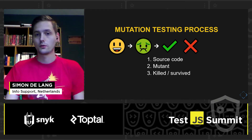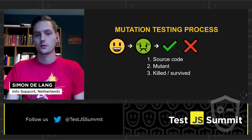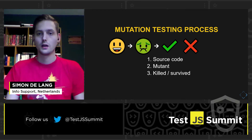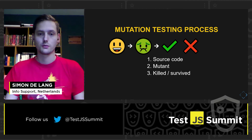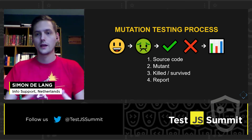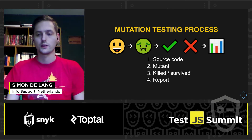So the mutation testing framework will run your tests and it can have either one of two outcomes. Either the mutant has been detected because of a failing test — in that case, the mutant has been killed. Or none of your tests failed and the mutant was able to survive. In mutation testing, we want to have killed mutants, so we want tests to actually fail because we have inserted the bug. The framework will do this hundreds or thousands of times for your source code, and in the end, it will combine it all together and generate a nice report.